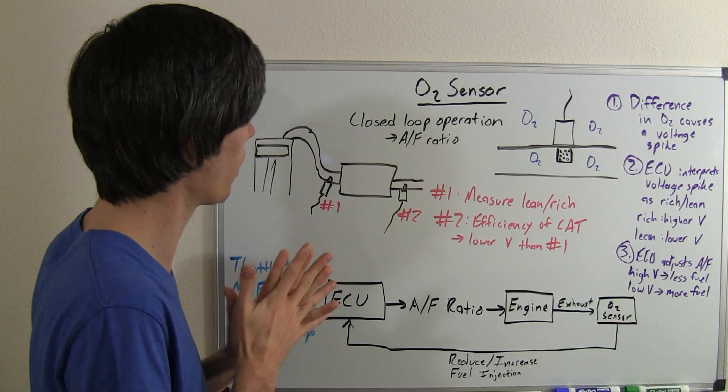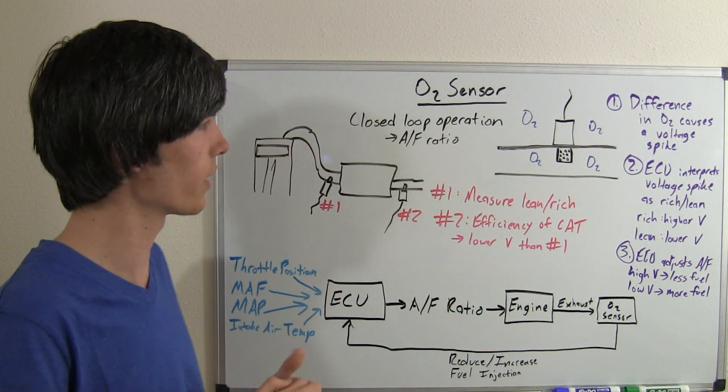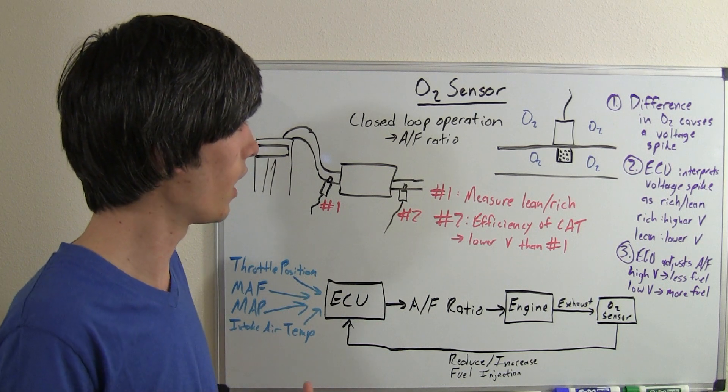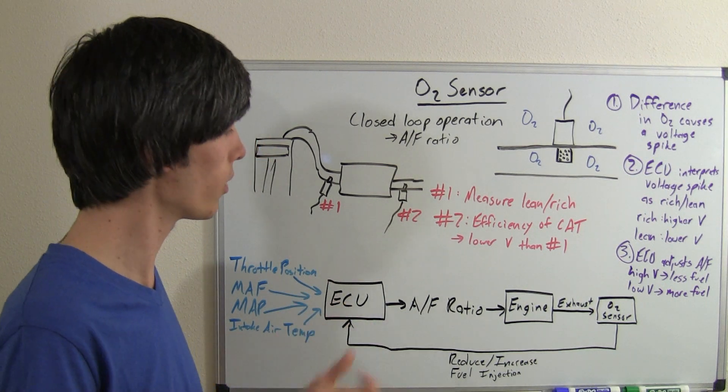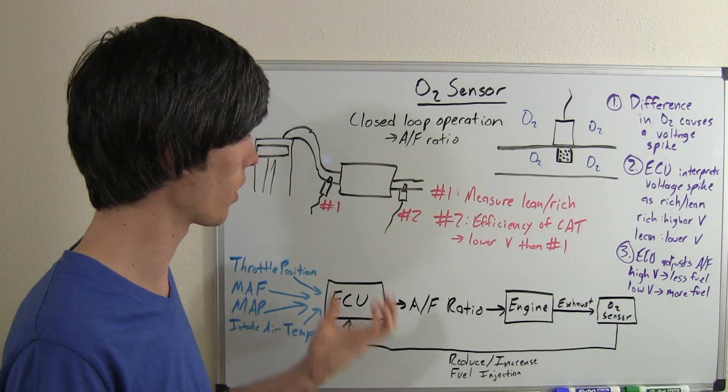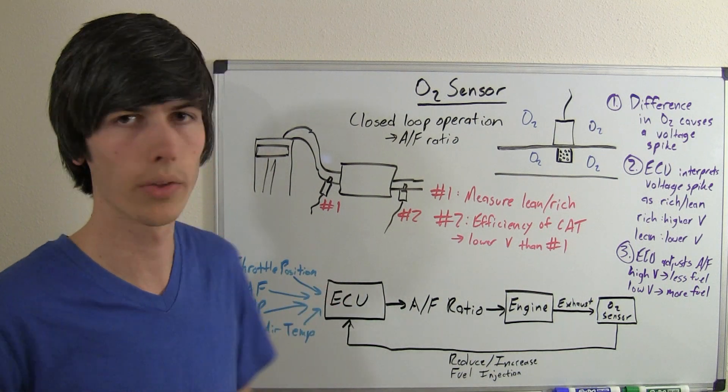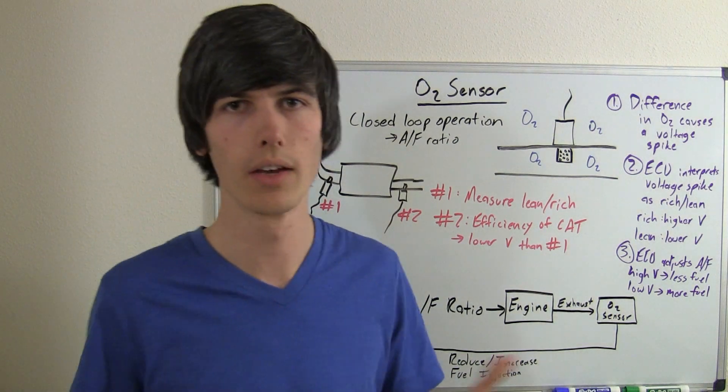So that's the basics of an O2 sensor. It is a common thing that it will set off a check engine light when these things fail, and a lot of people say it's fine, and yeah, you can run without it, but it is good to have that closed loop check so that your engine knows the exact air-fuel ratio to use. Thanks for watching. If you have any questions or comments, feel free to leave them below.